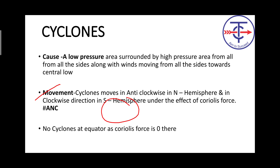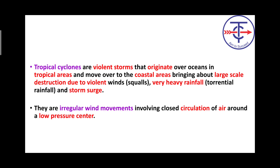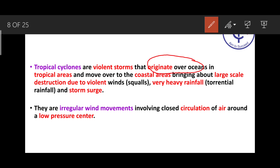Cyclone is basically a very fast, very high-speed wind that causes destruction — that is why cyclone is also called a natural disaster. These are violent storms. Tropical cyclones always form over water — over the ocean. When the water is warm and the cyclone forms over water, it will move towards the coast. That is how these cyclones form. You recently saw a cyclone in West Bengal — write its name in the comment section.